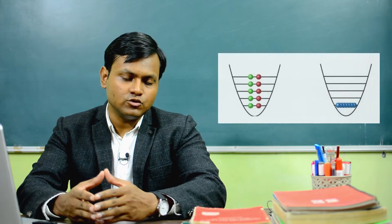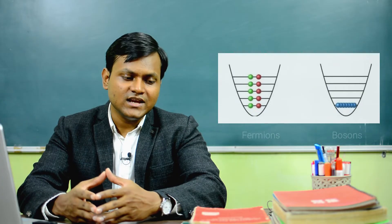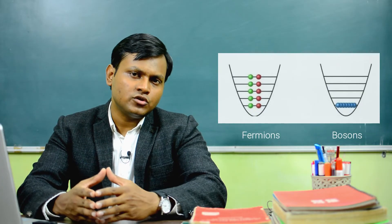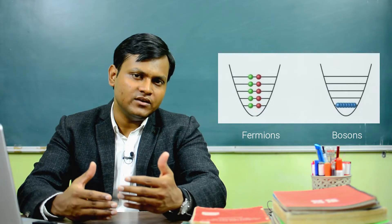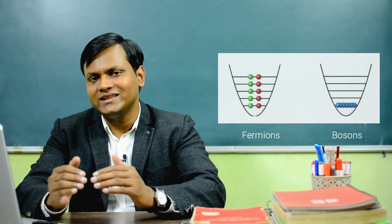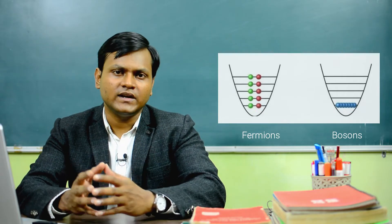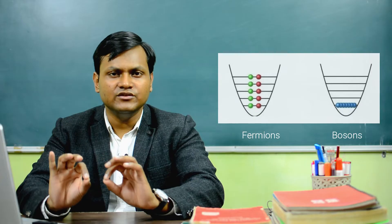Unlike fermion particles, there is another class of quantum particles known as bosons, which do not follow the Pauli exclusion principle. In the case of bosons, any number of particles can occupy the same energy state. So unlike bosons, in the case of fermions only two particles can occupy the same energy state — a collection with this property resembles a Fermi gas.